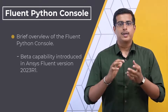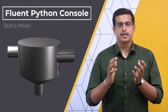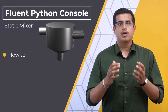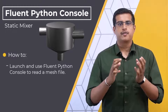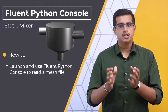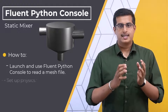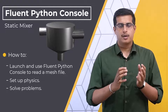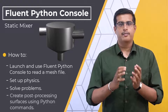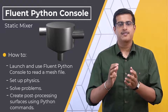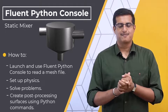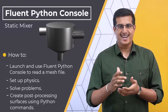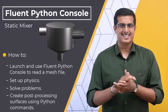With an example problem of a static mixer, we will learn how to launch and use the Fluent Python console to read a mesh file, set up physics, solve problems, and create post-processing surfaces using Python commands. Sounds interesting, right? Let's get started.